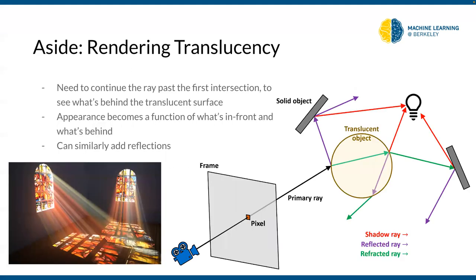If objects are translucent we have to keep going past the first intersection. We consider the density and color of the first point, then the density and color of the second point hit, and combine them — maybe through weighted averaging. In this diagram the ray goes from the camera through the image grid, hits the translucent object, and keeps going. For a voxel grid the density is explicit; for a mesh you can assign a density value to each face.